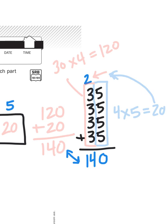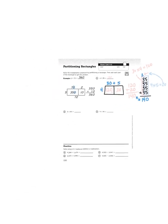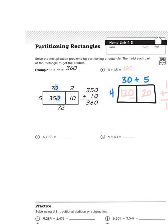So you see, this partitioning rectangles business works. So I will let you try these next two problems on your own: 83 times 6 and 49 times 9. Use the strategy, practice it, see how it works.